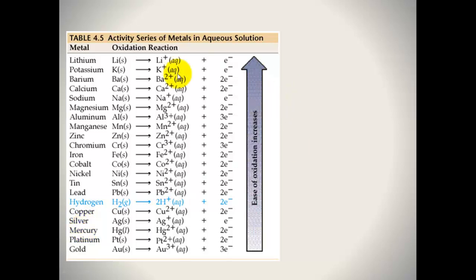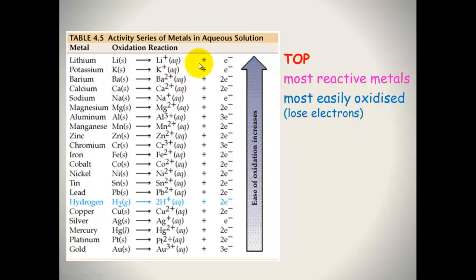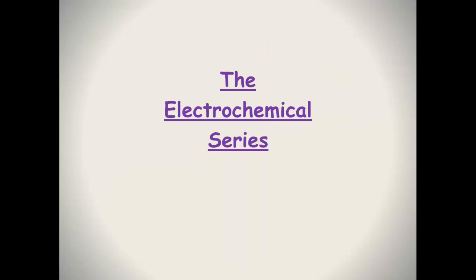So when you've got a series like this, at the top you can see the most reactive metals such as lithium, potassium, barium, and calcium. They are the most easily oxidized — they lose electrons very easily. That table forms the basis of the electrochemical series.